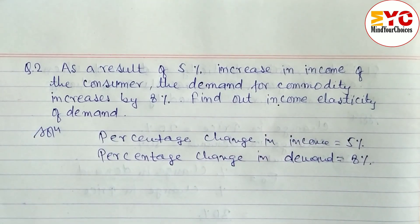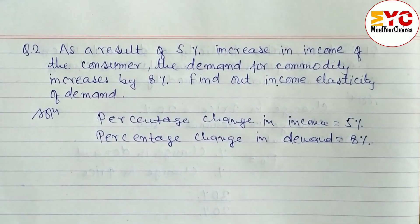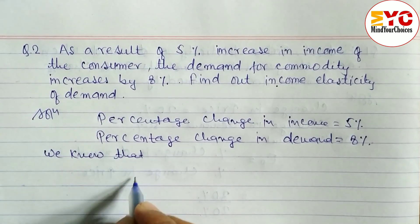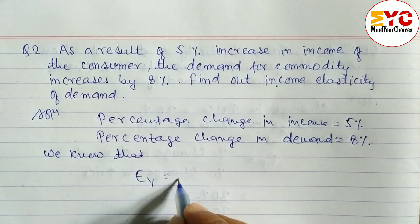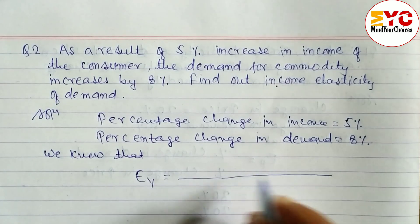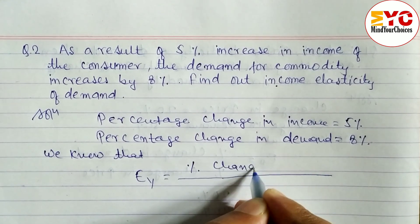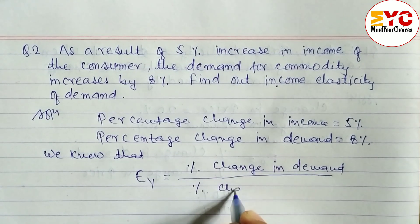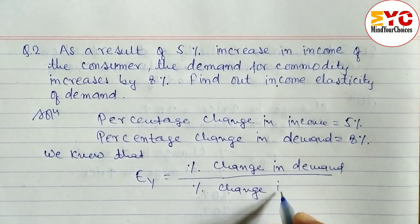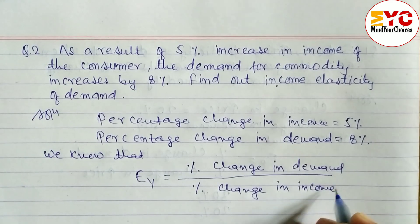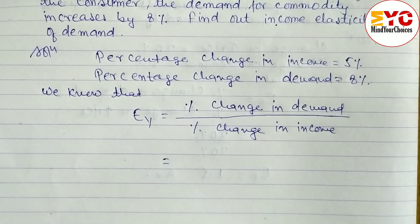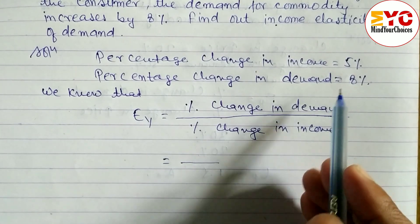Now we use the formula for income elasticity of demand. EY denotes income elasticity of demand, and the formula is: percentage change in demand divided by percentage change in income. Note that for price elasticity we would write price instead of income.